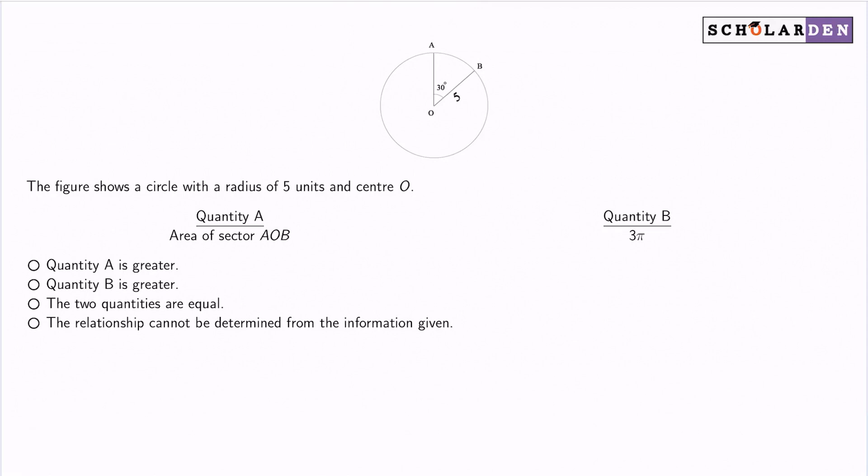We have two quantities and we want to compare their quantities to see if one's greater than the other, they're equal, or if we just can't determine the relationship with the information given. The answer here is quantity B is greater. And here's why.